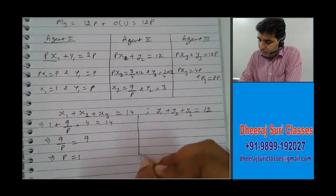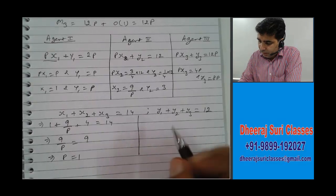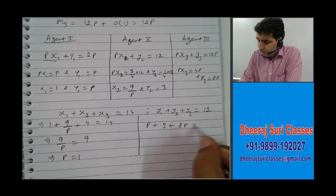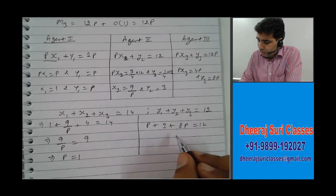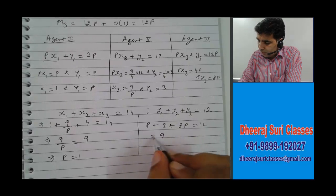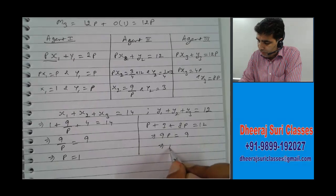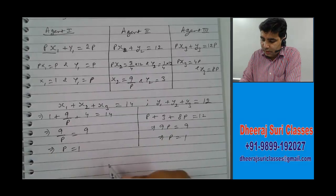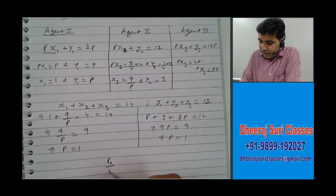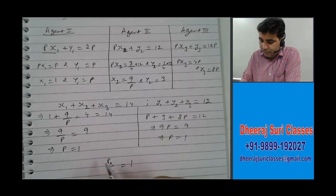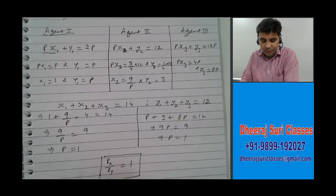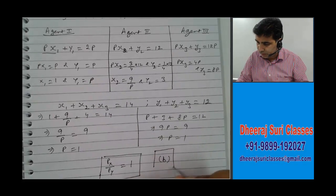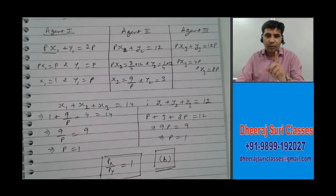And for good 2, y1 plus y2 plus y3 equals 12 units. y1 is P, y2 is 3, y3 is 8P — this equals 12. So we get 9P equals 9, which means P equals 1. Both conditions give P equals 1. Since P is Px by Py, Px by Py equals 1. Going back to the question, this is option B, so the correct answer is option B. This is question number 21.